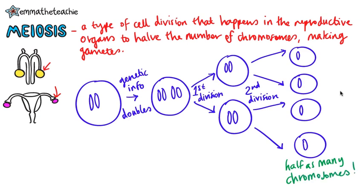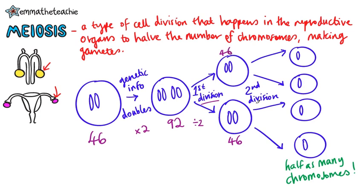Let's look at this in terms of humans. In the body cell, you've got 46 chromosomes. So when the genetic information is copied, you end up with 92. Then, in the first division where the cell splits in two, you're going to go back to having 46 chromosomes in each cell. And in the second division, when each cell divides in two again, you'll get 23 chromosomes in each gamete.